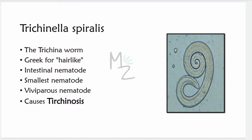Trichinella spiralis — also called Trichina, Greek for 'hair-like' — is an intestinal nematode and the smallest nematode. It does not lay eggs; instead it releases larvae, which is why it is termed a viviparous nematode. It is responsible for causing trichinosis or trichinellosis, a disease characterized by fever, GI symptoms, myalgia, and periorbital edema.